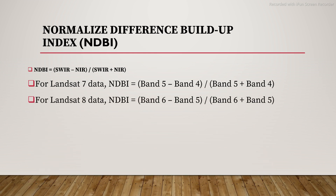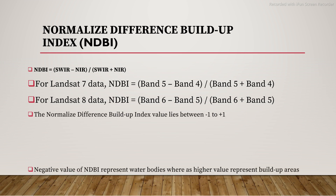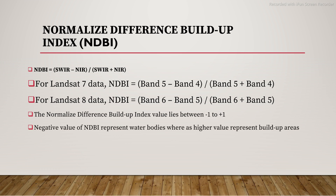For Landsat 8, NDBI uses Band 6 (SWIR) and Band 5 (NIR). The NDBI value ranges from minus 1 to plus 1. Negative values represent water bodies, higher values represent built-up areas, and very low NDBI values indicate vegetation.